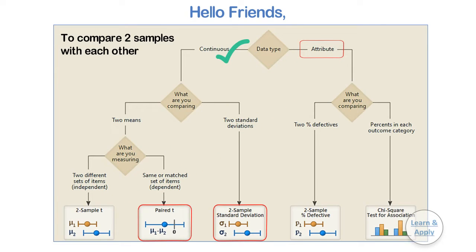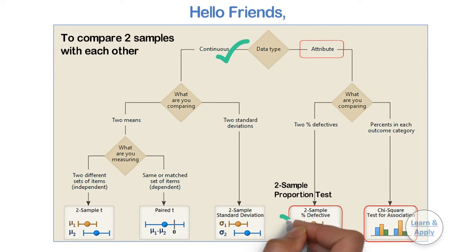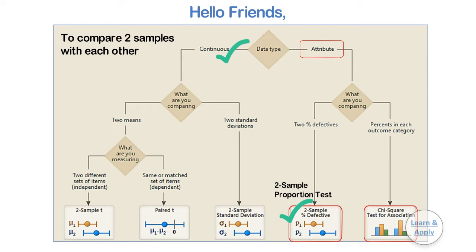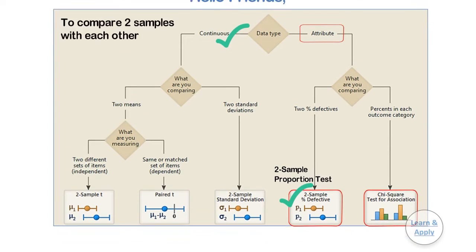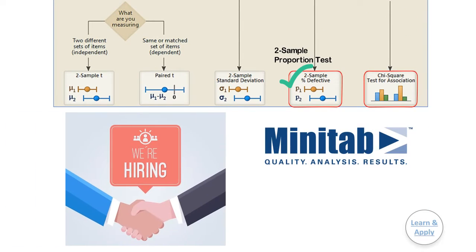There are two types of hypothesis test in this category: first, the 2 percentage defective test, also called as 2 sample proportion test; and second, the Chi-square test for association. In this video, we are going to learn the first hypothesis test in this category — that is, the 2 sample proportion test in Minitab software with the help of a practical example for easy understanding and better clarity.